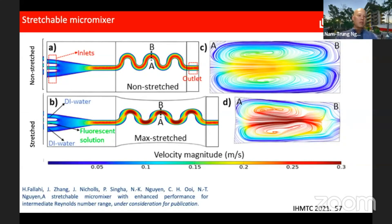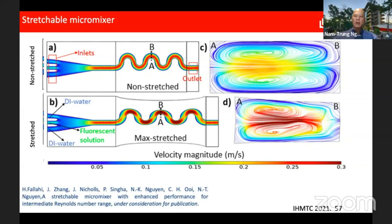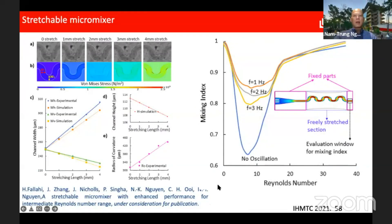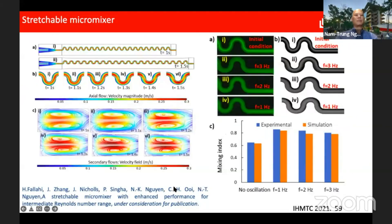Another application of stretchable microfluidics is enhancing mixing. By stretching a meandering channel device, we change the curvature of the channels and alter the Dean vortices, enhancing mixing. Stretching periodically — changing curvature periodically over time — gives the best mixing results. Both simulations and experiments show that stretching the micro mixer enhances the mixing index.